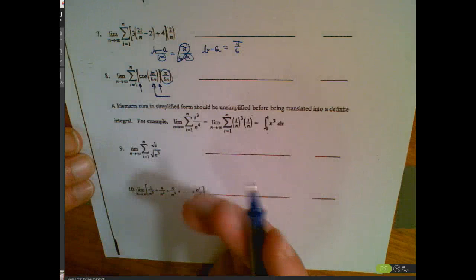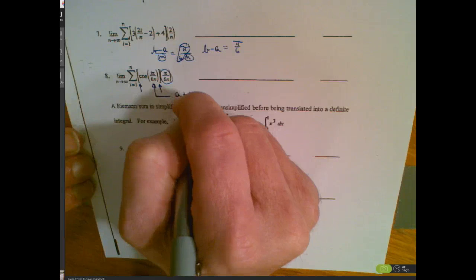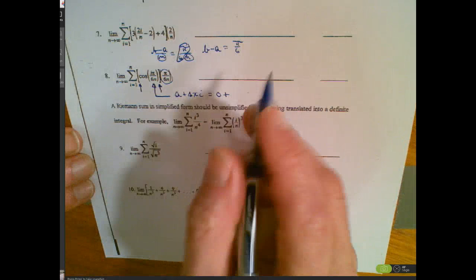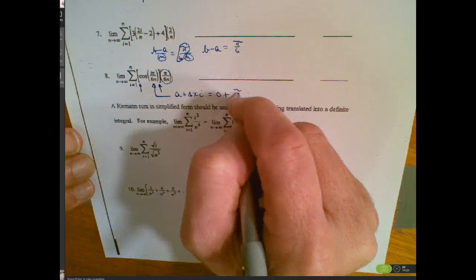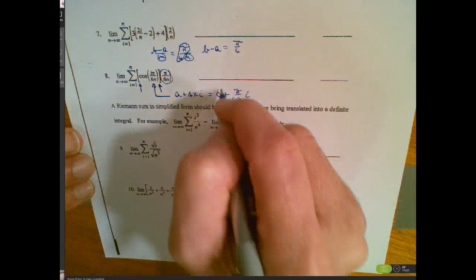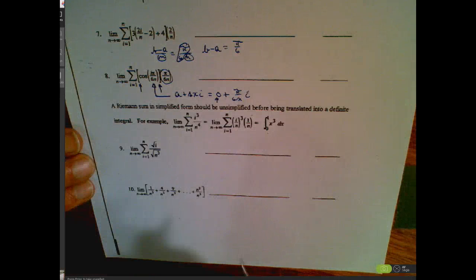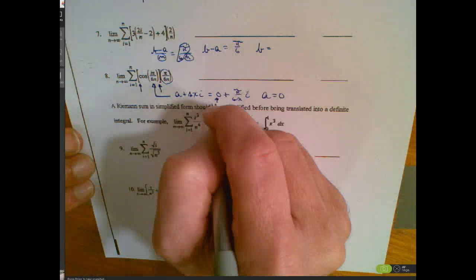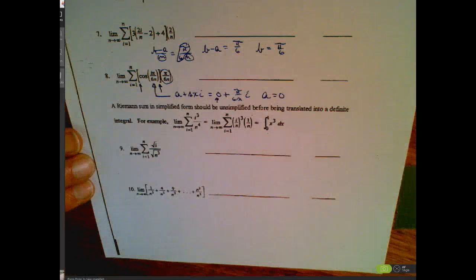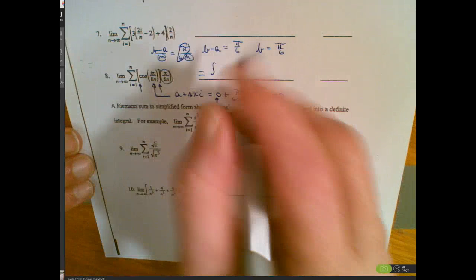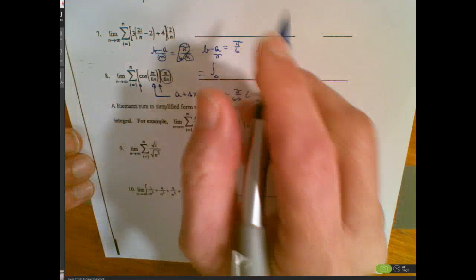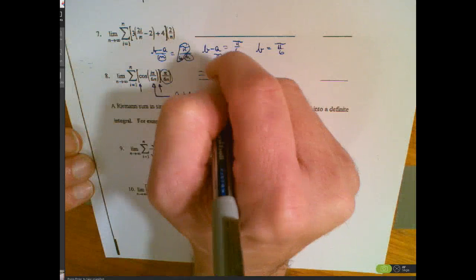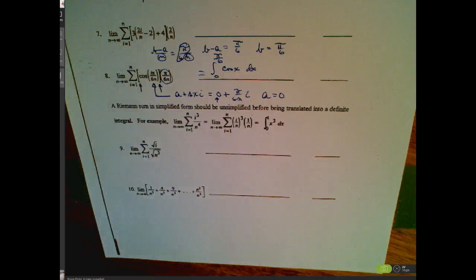Examining x sub i, I want the form a + delta x times i. Since I don't see an added constant, a must be 0. Then delta x times i = (pi/6n) times i — that fits. Since a = 0, b = pi/6. This Riemann sum represents the definite integral from 0 to pi/6 of cos(x) dx.